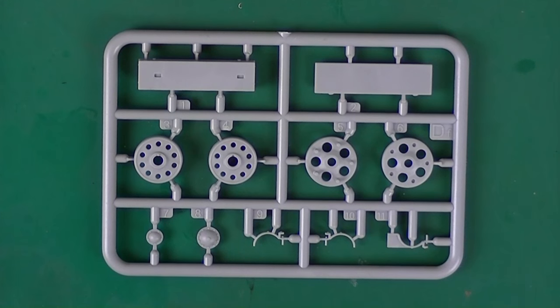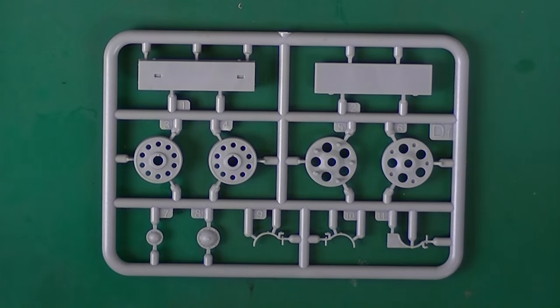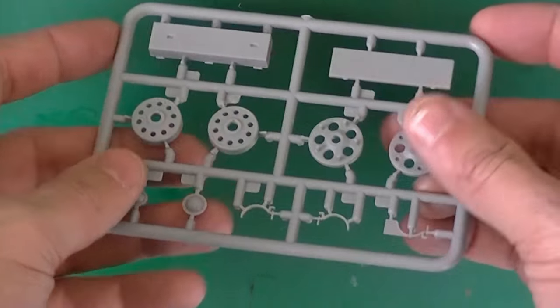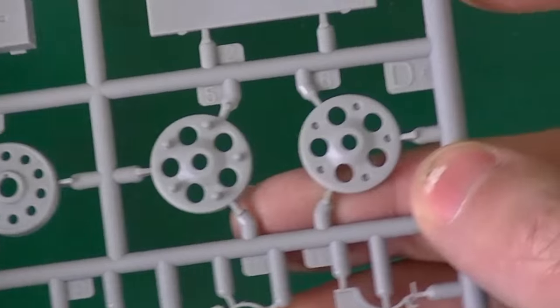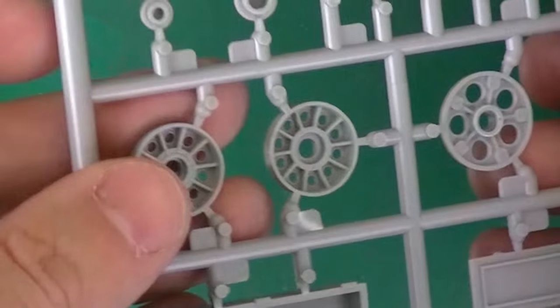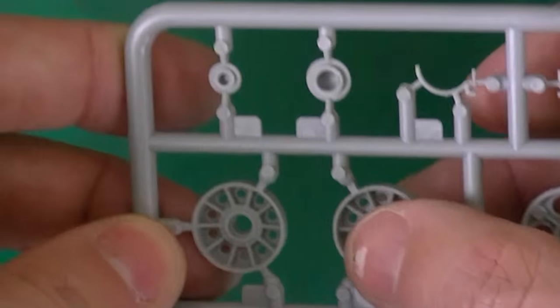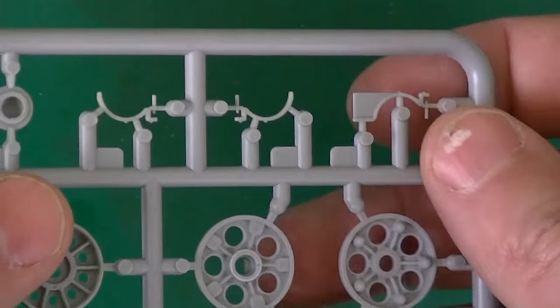Then two of this sprue. On here is just our sprocket idlers. And then by the looks of it another toolbox. These look nice. Some very fine parts up there.